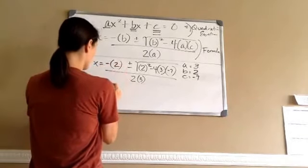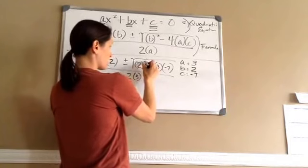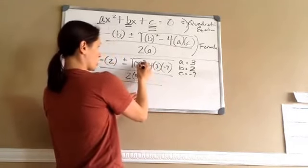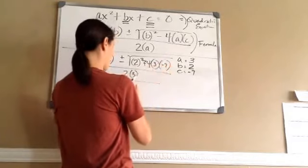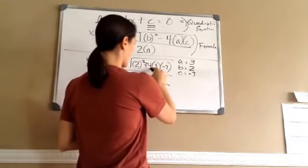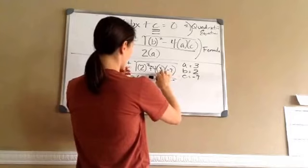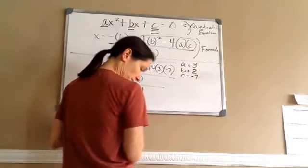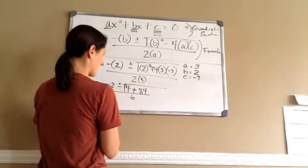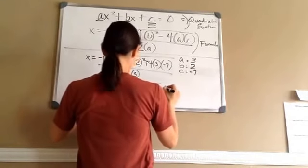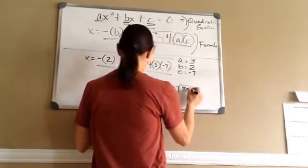Negative times 2 makes negative 2, plus or minus — just bringing everything down. 2 squared is 4. I'm going to make this plus negative so we can multiply through. Negative 4 times 3 is negative 12, and negative 12 times negative 7 is positive 84. So 2 squared minus the product gives us 4 plus 84, which equals 88. All over 2 times 3 is 6.